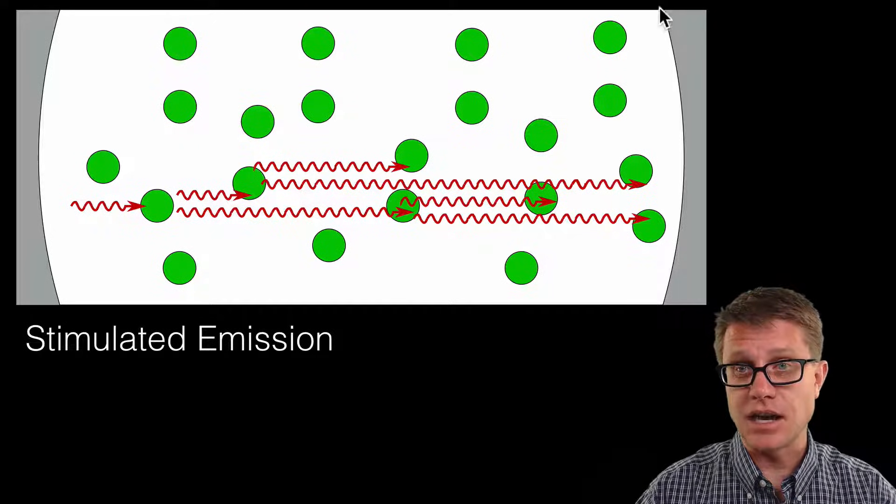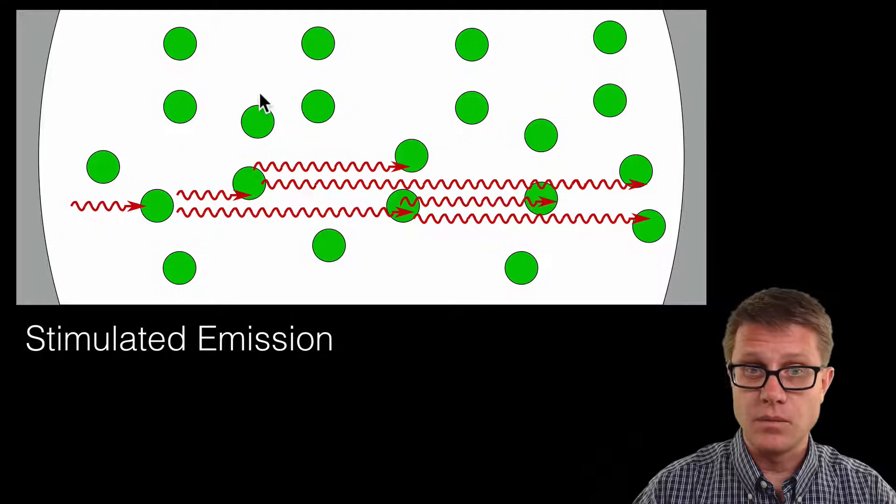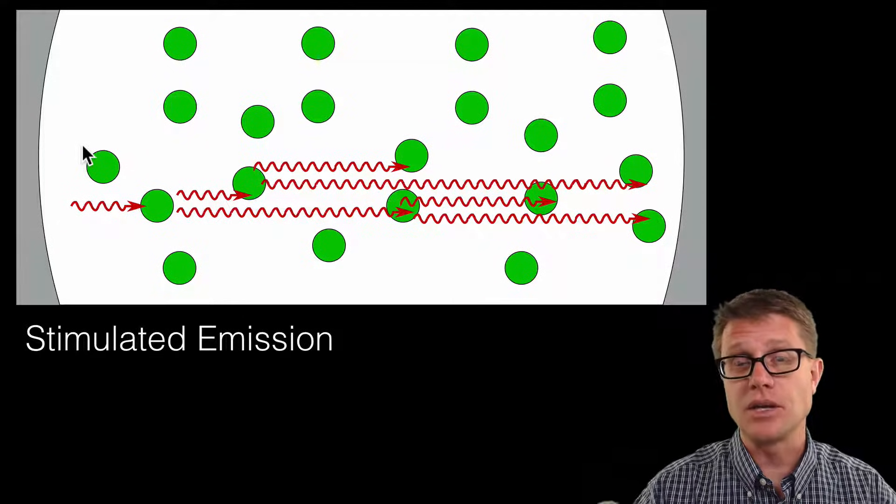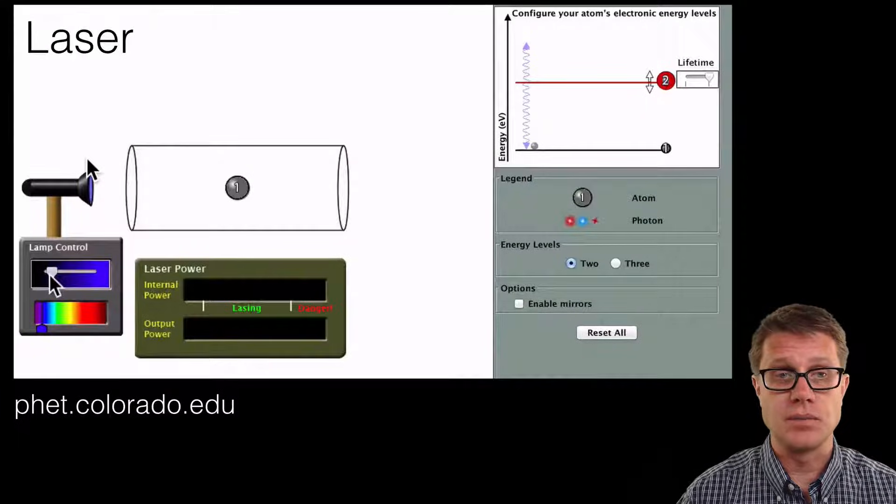Now if we can put these inside a container where we reflect those photons back and forth using mirrors on either side, then we can start to build up a laser or this stimulated emission.